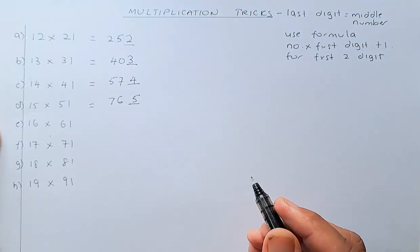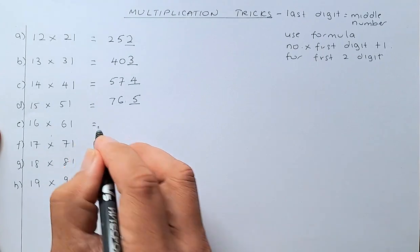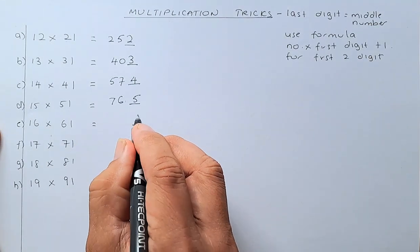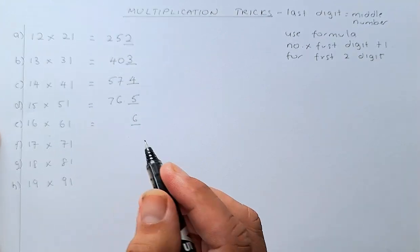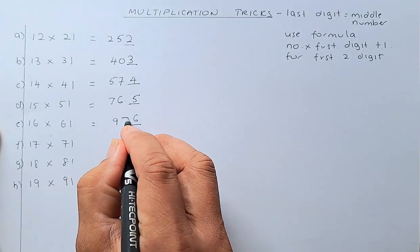So, again, you can do it instantly. Next one. The last digit is going to be 6 because the middle number is 6. And then, you multiply 16 by 6 is going to be 96 plus 1 is going to be 97.